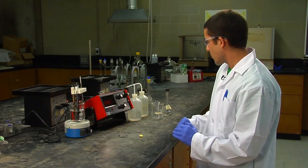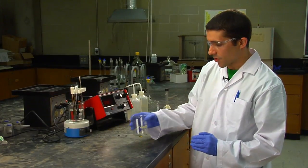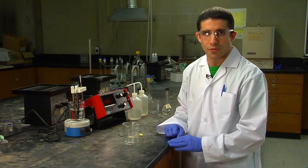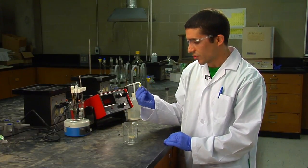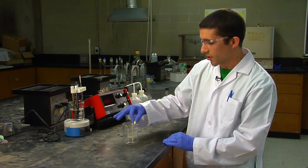To prepare to do a measurement, you would just simply take a beaker, best to use a 250 ml beaker. You're going to place in that beaker your magnetic stirrer to allow mixing to occur during the potential measurement.